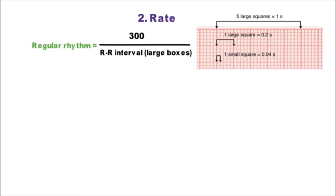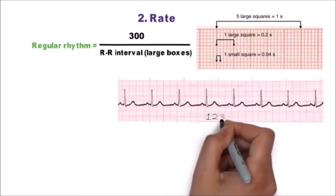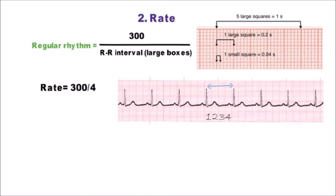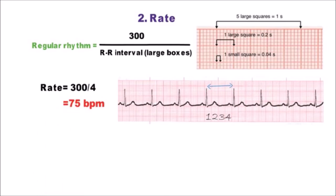So 5 large squares is equal to 1 second. Now in this normal sinus rhythm ECG there are 4 large boxes between RR interval. So the rate will be 300 divided by 4, that comes out to be 75 beats per minute.